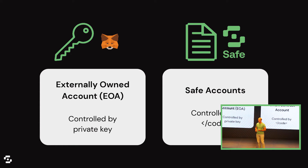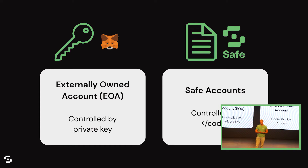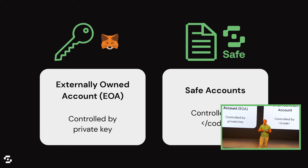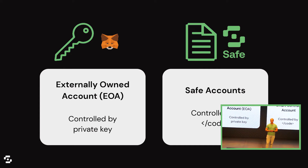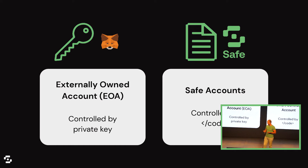That's exactly what smart contract accounts try to solve. The difference is that the logic of how an account is controlled is not part of the protocol — it's not this very binary logic: if you have the private key you can do anything, if you don't you can do nothing. Instead, you can code any logic as part of the smart contract representing your account. This enables running different programs, different permissions, different ways how the account is controlled.